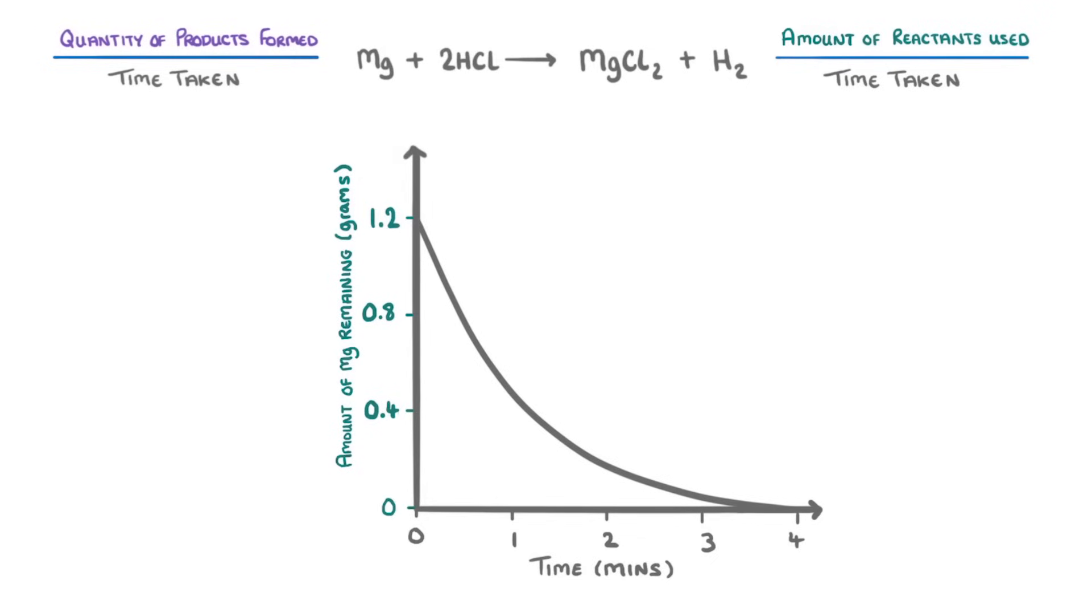So if we wanted to find the rate of reaction at one minute, we'd just do the same process as before. So we'd find the 1 minute point on our curve, draw our tangent at that point, and use that line to figure out our change in y, which is about 0.72g, and our change in x, which is 1 minute 40 seconds.